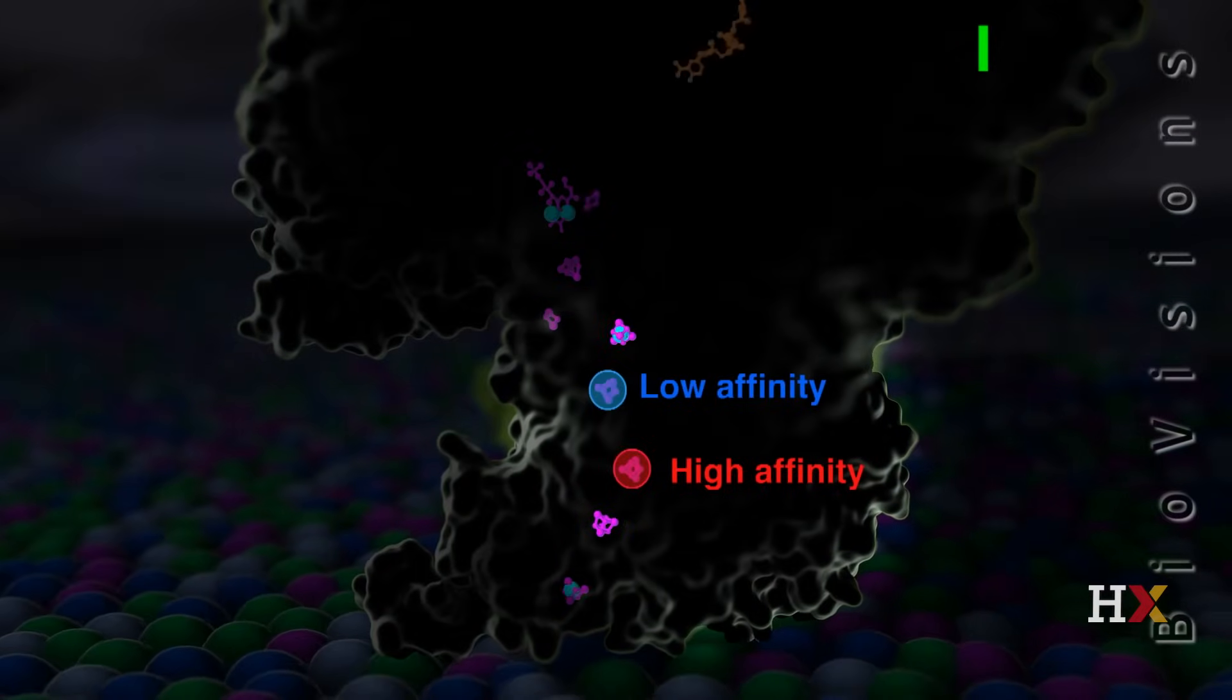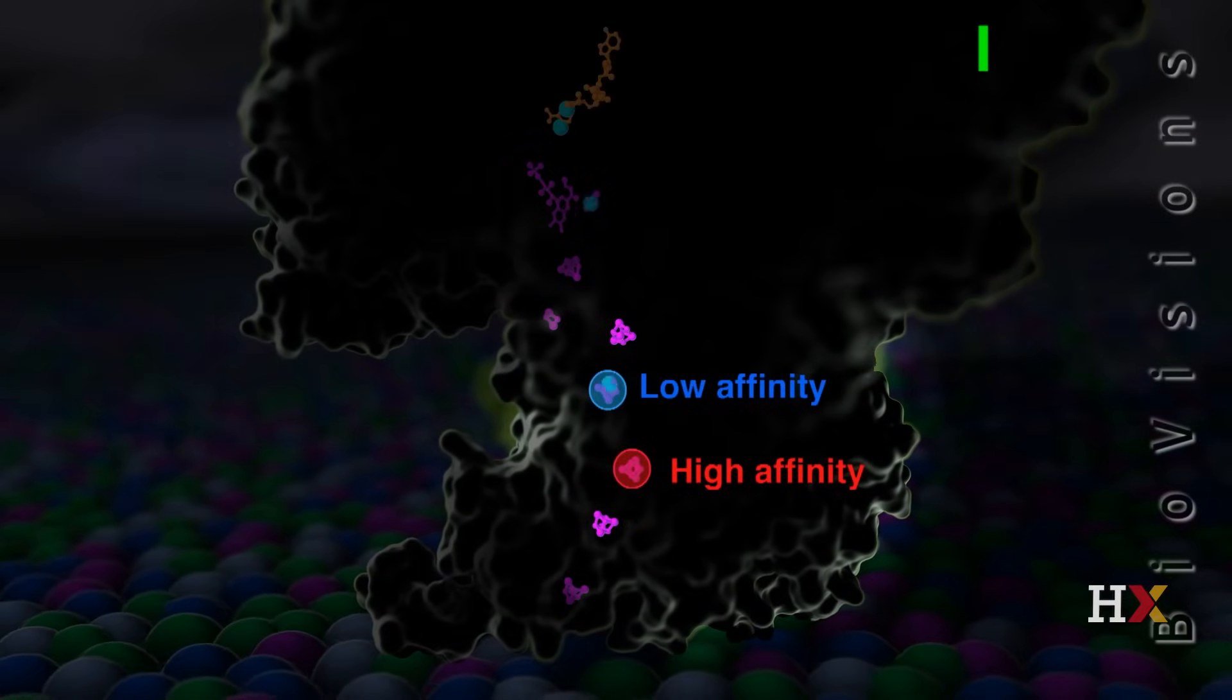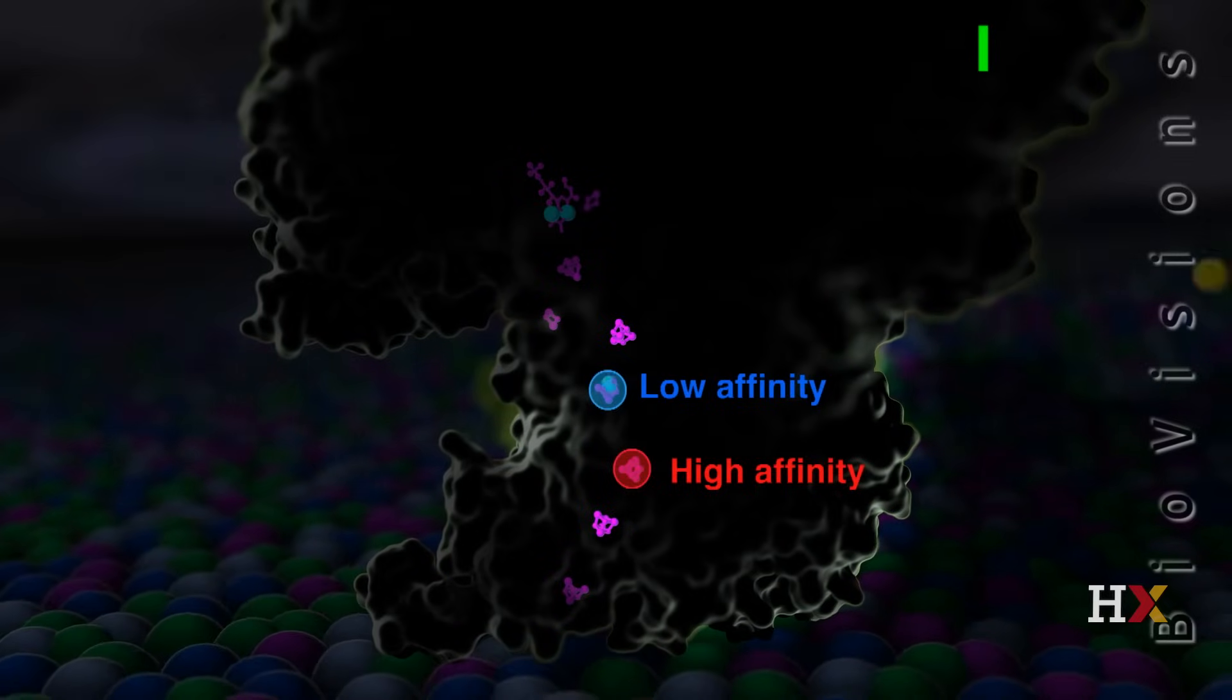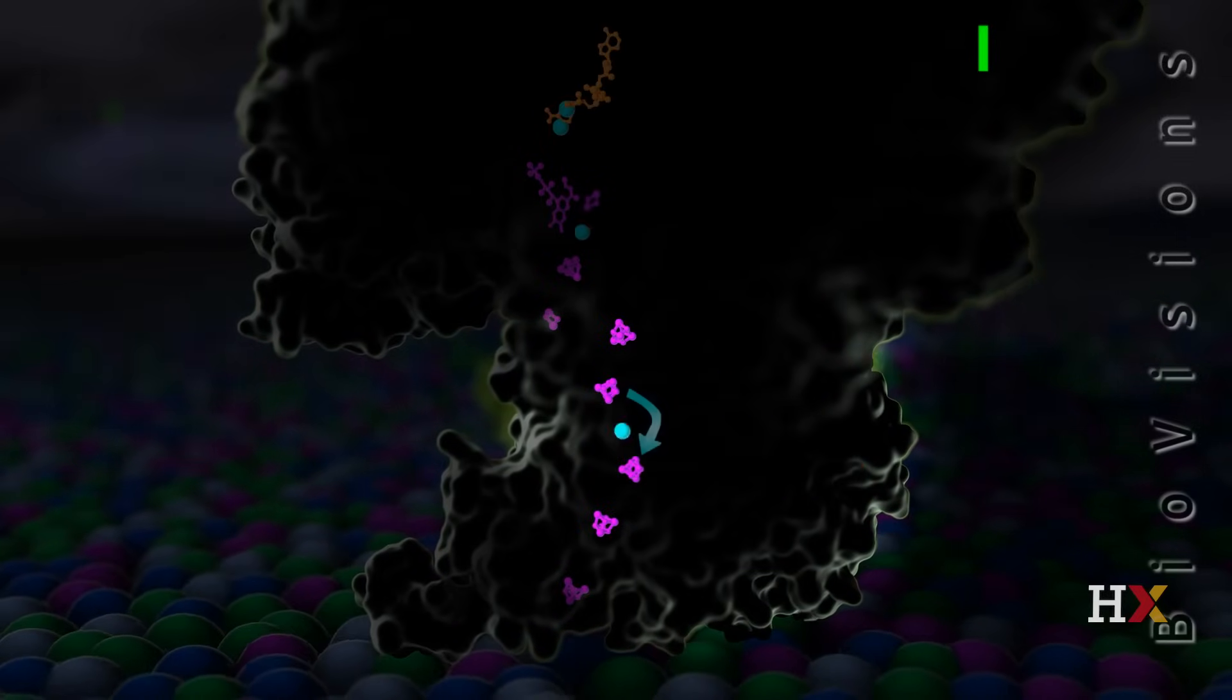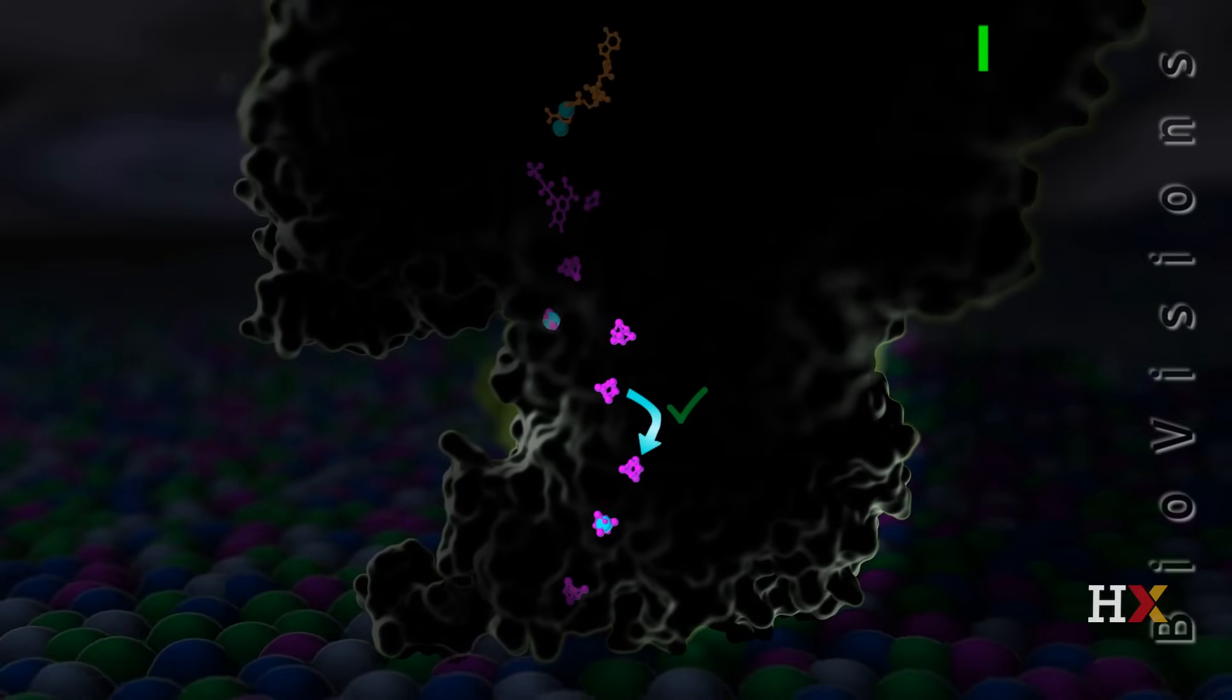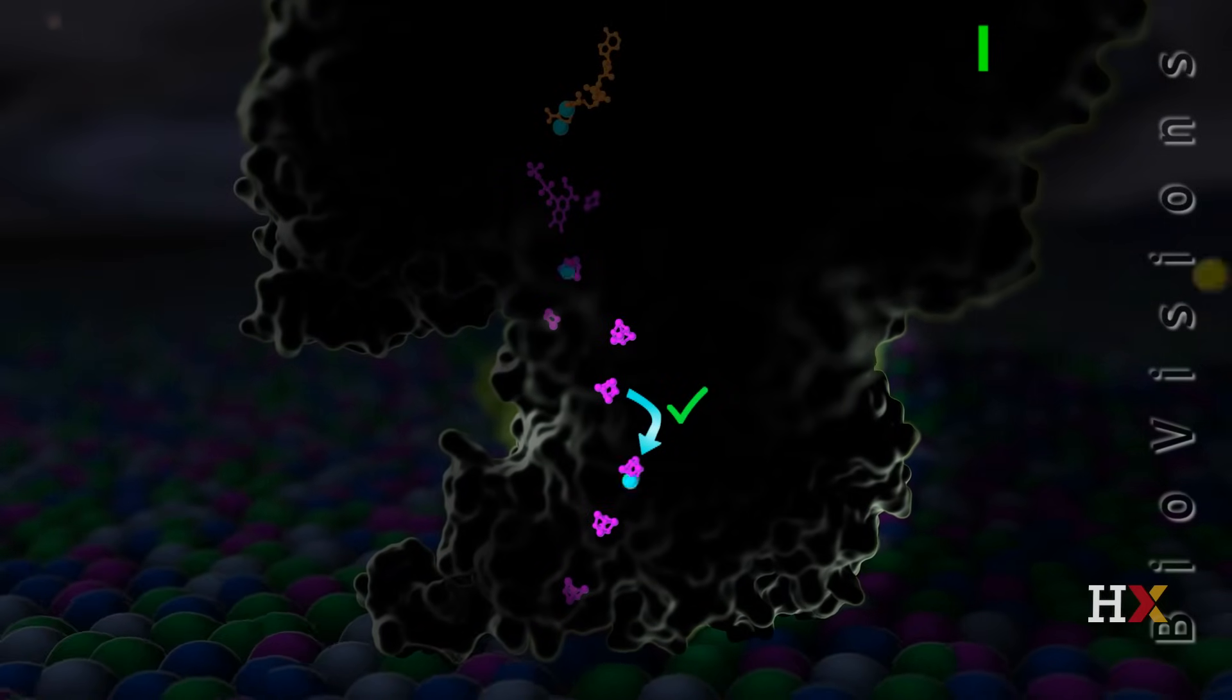First, the bottom redox center has higher affinity than the top one. Second, the distance between these adjacent redox centers is ideal for an electron jump to occur, which explains why electrons typically don't bypass the bottom redox center.